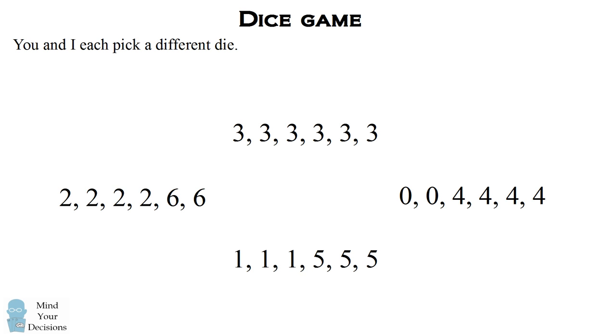So here's how the game works. You and I are each going to pick a different one of these dice. We're not going to pick the same ones, we're going to pick different dice. We're then going to roll against each other, and the person who rolls the higher number gets a point. We then repeat that many, many times, so that the person who rolls the highest number of points over many rolls is going to win the game.